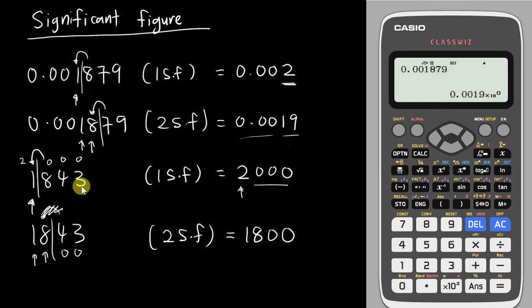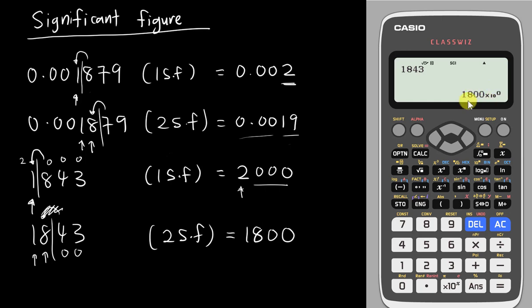For 1843 with 2 Significant Figures already preset: I type 1843 and press Enter. The calculator shows 1.8 multiplied by 10 to the power of 3. Since this power is positive, I tap ENG (without Shift) until the power becomes 0. After pressing ENG twice, it becomes 10 to the power of 0 — and the answer is 1800. For a bigger number like 18432, if the power is 4, keep pressing ENG until you reach 0.